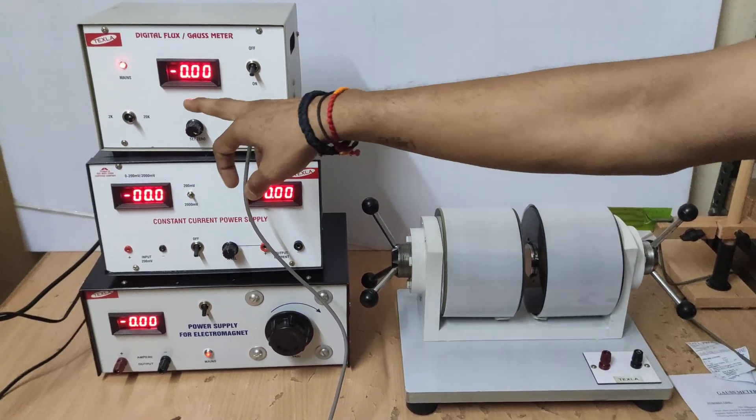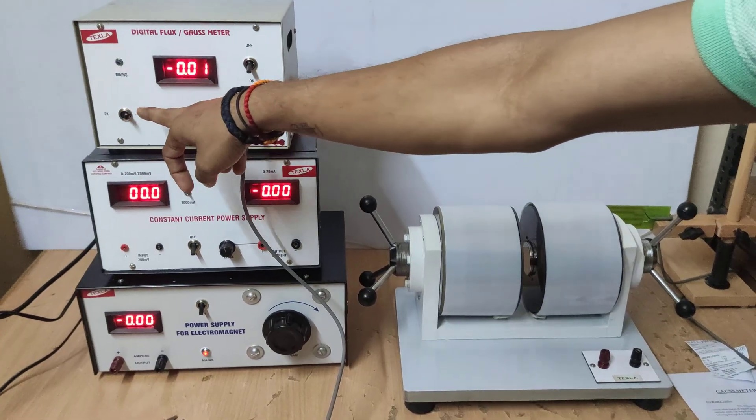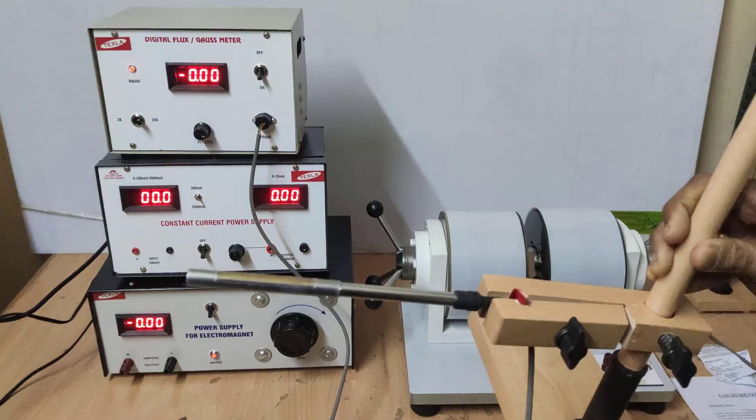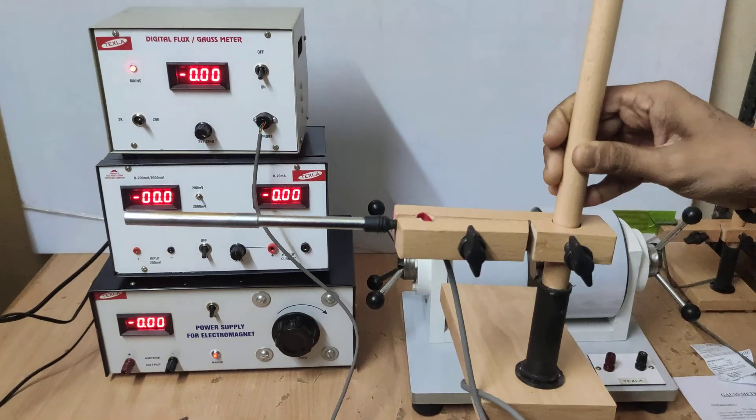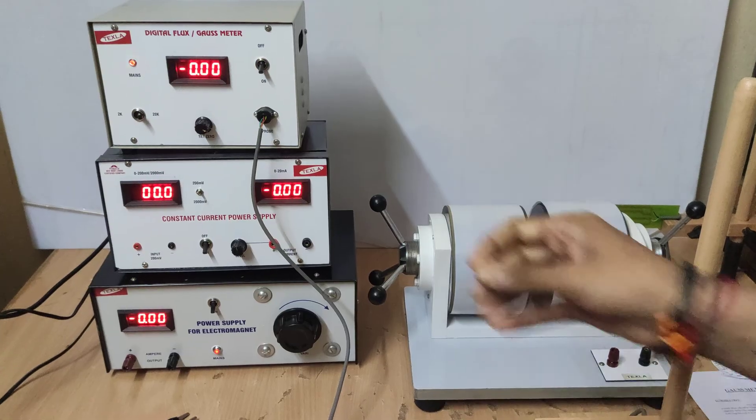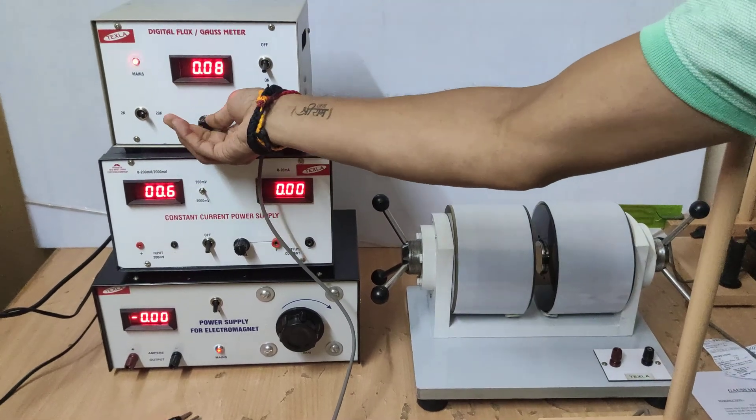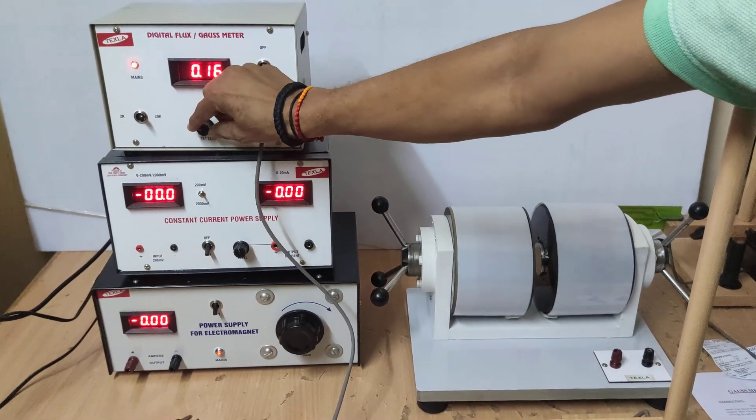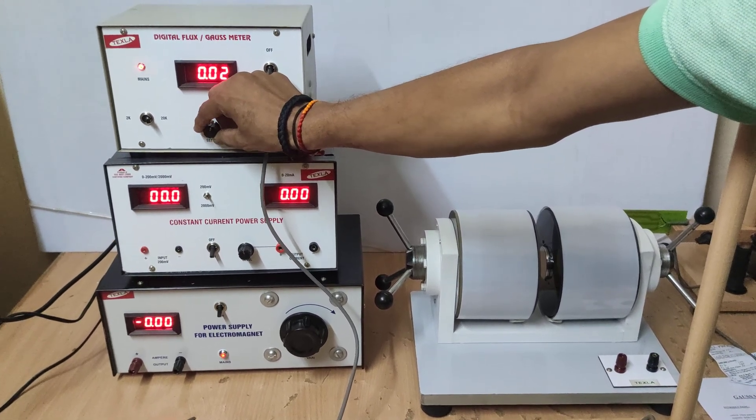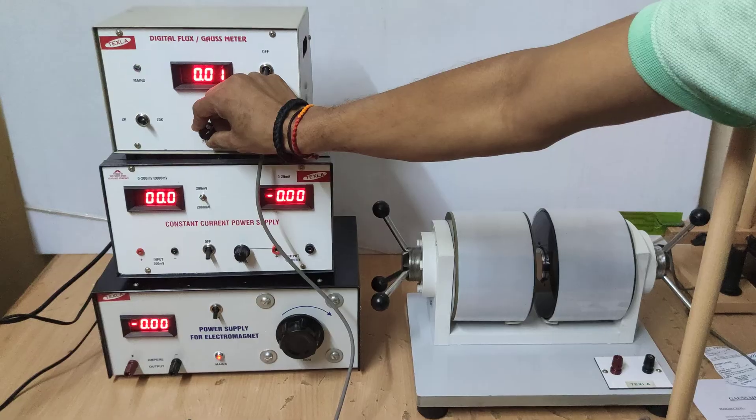The gauss meter is a digital gauss meter which has two different ranges, 2k and 20k, with a probe and provided with a wooden stand. Initially we need to set the gauss meter to zero by this knob. We need to set it to the zero option so that there is no error. With this knob I am setting it to zero.